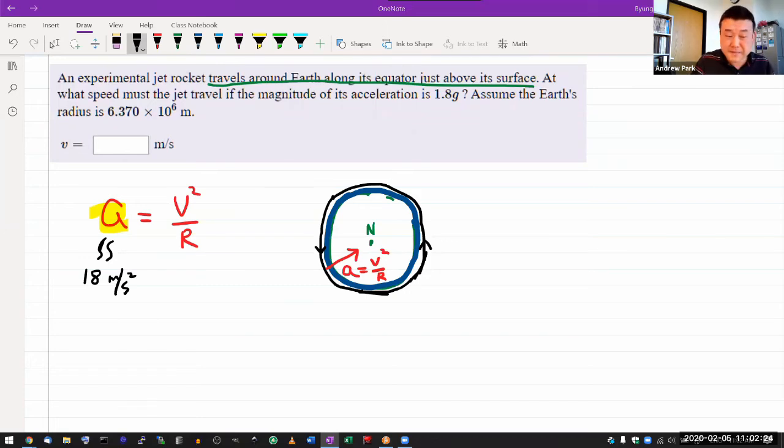It's telling you to assume Earth's radius, and I guess what you have to realize is that if it's just above its surface, this is such a large number, it's six million meters. So if it's above 100 meters or whatever, it's basically the radius of the earth is the radius r here. So this is the radius of the circle that it's traveling in.